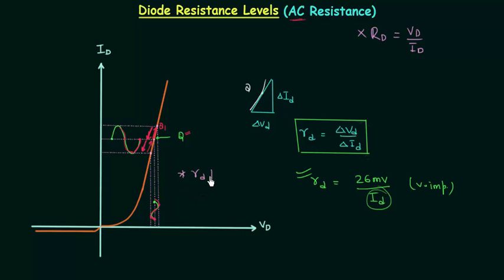The AC resistance will decrease when we increase the slope. So on increasing the slope, the AC resistance will decrease, and this is an important point.